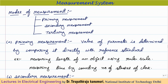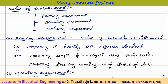Measurement can also be categorized by mode: primary, secondary, or tertiary. In primary measurement, the value of the parameter is determined by directly comparing it with a reference standard — this is essentially the same as direct comparison. Examples are measuring the length of an object using a ruler, or measuring time by counting clock strokes.